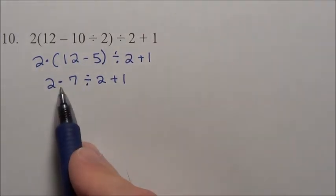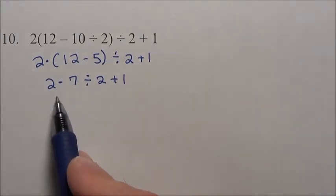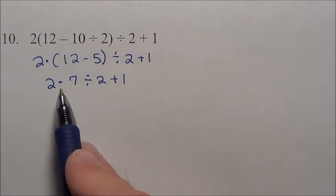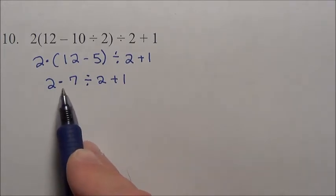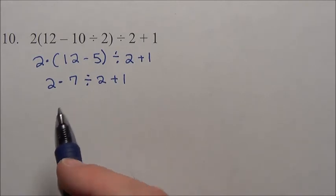Divided by 2 plus 1. Now you have multiplication and division. They're of the same worth. One is not more powerful than the other. So we'll do the multiplication first in this case because it came before that division. It's not more powerful, it's just in the front. We work things left to right.